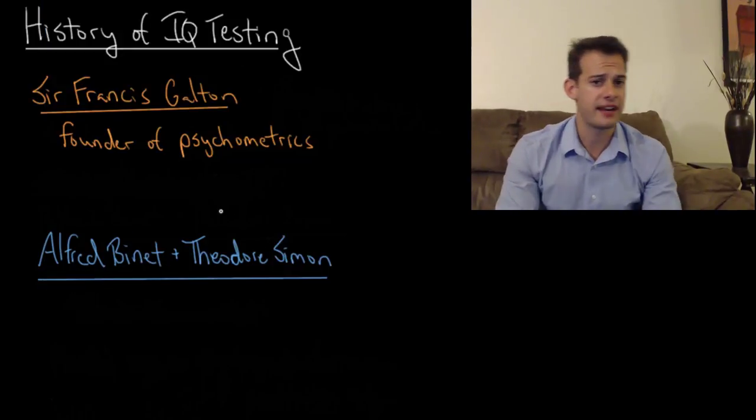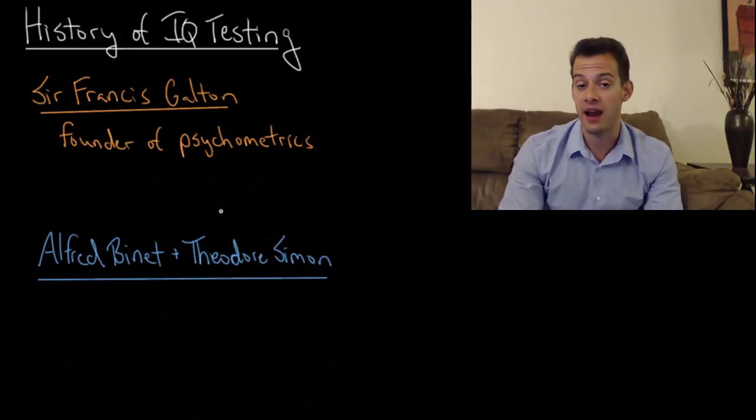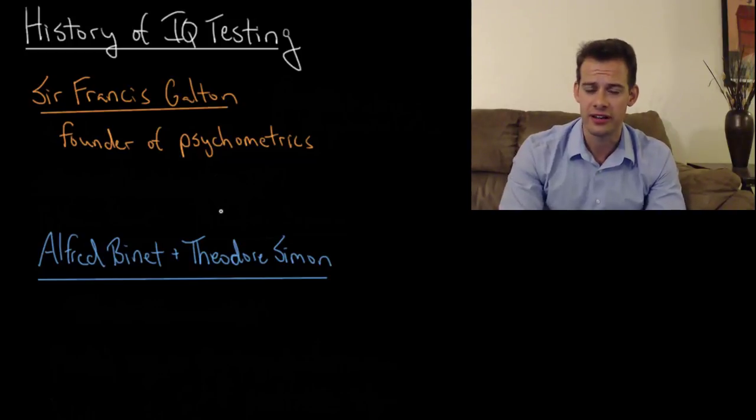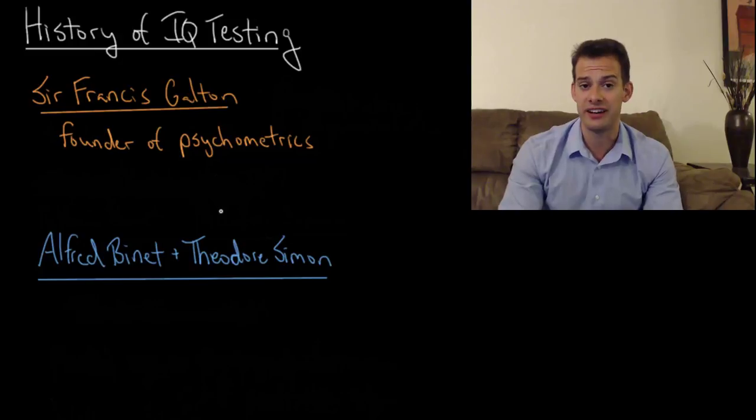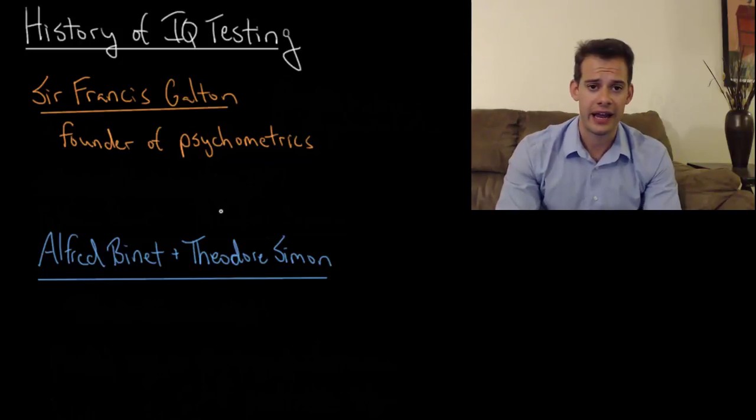Now Galton was interested in intelligence and he believed that it was inherited. In 1869 he published a book called Hereditary Genius in which he followed family histories and genealogies of eminent minds in an attempt to find this association between intelligence and inheritance. He was also influenced by the ideas of his half cousin Charles Darwin and he believed that if intelligence is inherited then it must offer some sort of survival advantage.